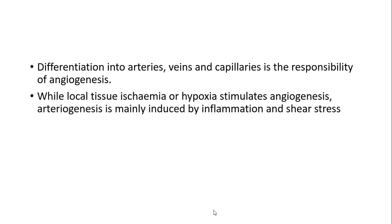As angiogenesis occurs, it differentiates into arteries, veins, and capillaries. Local tissue ischemia or hypoxia stimulates angiogenesis, while arteriogenesis is mainly influenced by inflammation and local shear stress. So formation of new arteries always results from inflammation and stress.